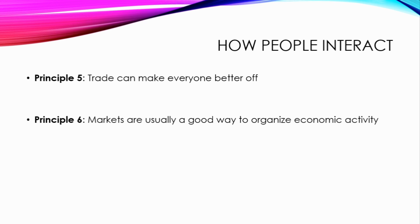Principle 6: markets are usually a good way to organize economic activity. Economic activity encompasses everything about producing, buying, or selling goods and services. Markets provide a defined environment for these activities — firms decide whom to hire and what to produce, while households decide which firms to work for and what to buy with their incomes. The market usually gives a good organization for these economic activities.